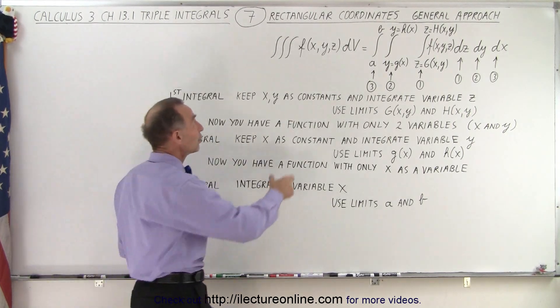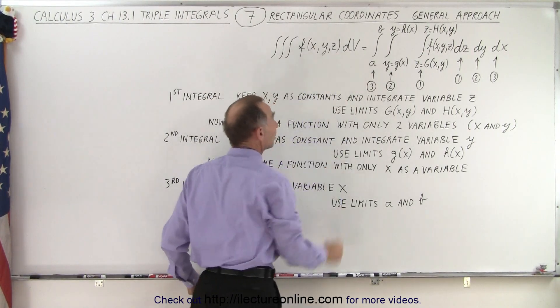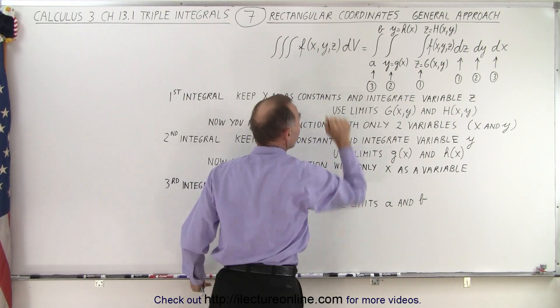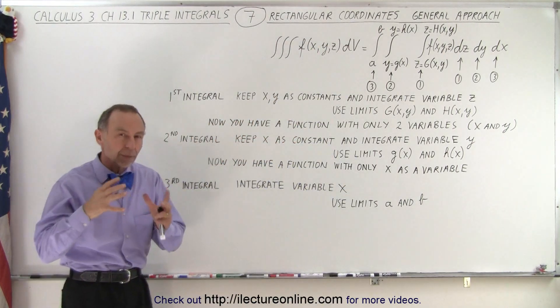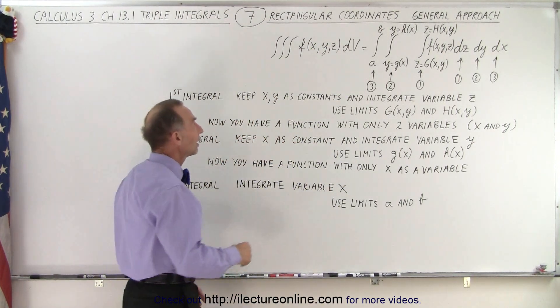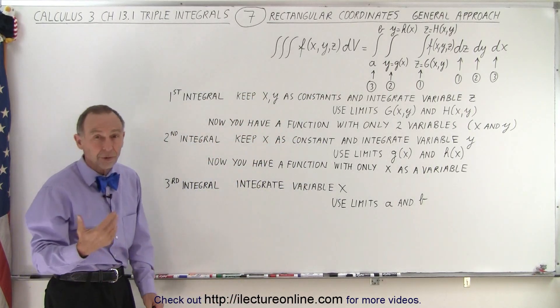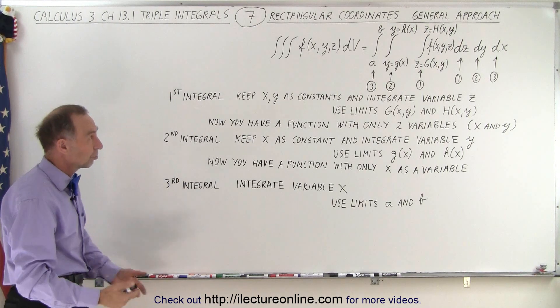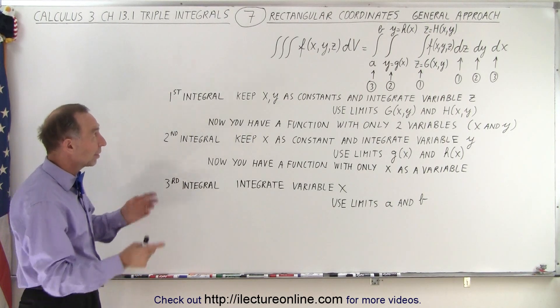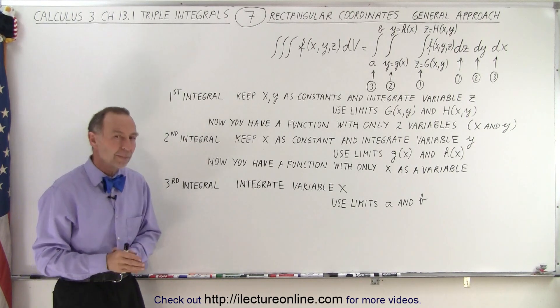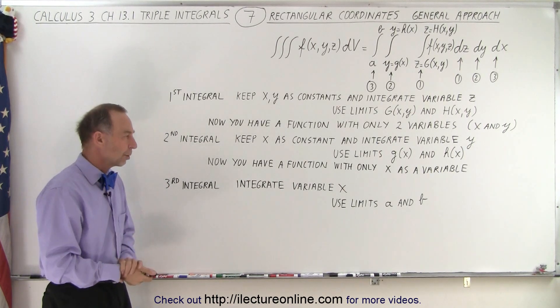And yes, sometimes we do have a function there and sometimes we only are finding the volume. So if this function isn't there, we replace that just with one, one times dv, then we're finding the volume of something. But if there's a function here, that means we could be finding the mass or the density or something else like that, the charge distribution, whatever it may be, because that now has some function of the three variables multiplied times dv. So that's the difference between those two approaches.